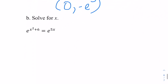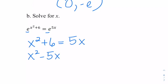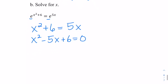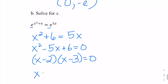Now we're going to use the one-to-one properties of E. It is the same base here, so we can set these two exponents equal to each other and solve. We want to make it equal to 0, and we can factor that pretty easily — that's going to be (x minus 2)(x minus 3). So x equals 2 and 3.